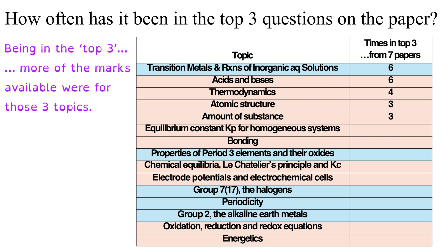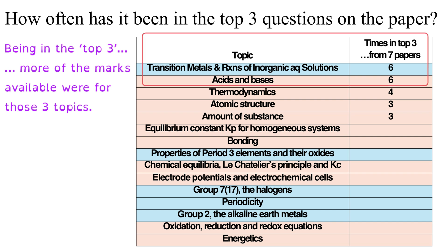Every year on an exam paper, some topics are worth far more marks than others, and I've ranked the number of times topics appear in the big three questions on a paper. This table looks at how many times a topic has been in the top three most highly ranked questions in terms of marks available. Here's where the pattern really starts to develop: there are two topics — acids and bases, and transition metals — that have been in the top three six times out of seven. Only three other topics have ever been in the top three: thermodynamics, atomic structure, and amount of substance. So these five topics are already looking like the highest priority for revision.